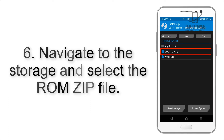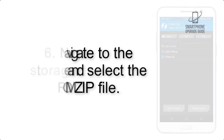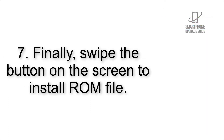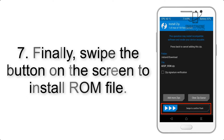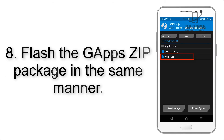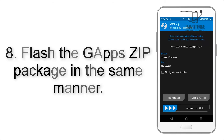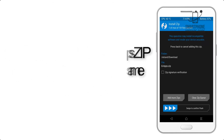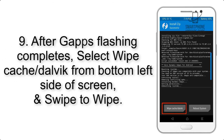Step 6: Navigate to the storage and select the ROM zip file. Step 7: Finally, swipe the button on the screen to install the ROM file. Step 8: Flash the GApps zip package in the same manner.